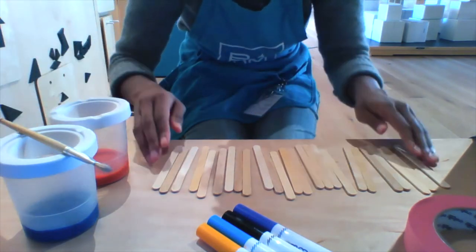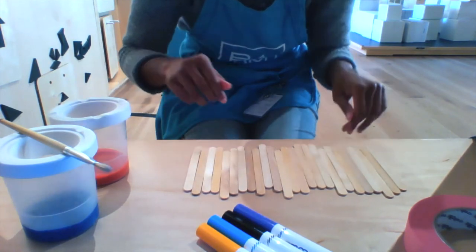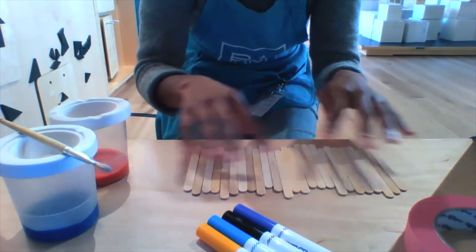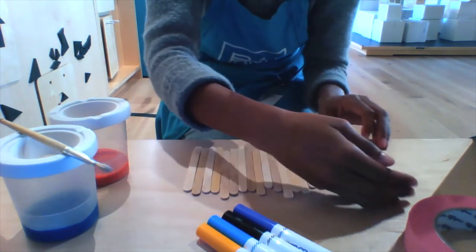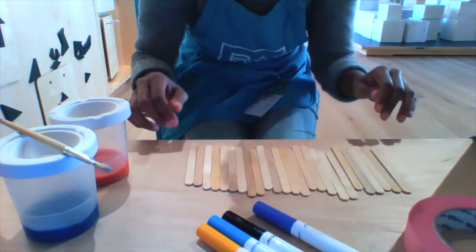To get started, line up the popsicle sticks on a flat surface, making sure they are touching and the ends are lined up evenly. Does that look nice and even?